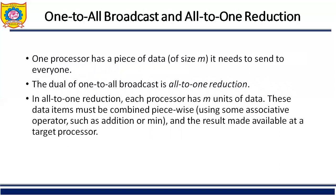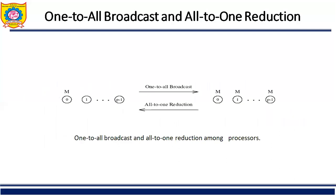One processor has a piece of data of size M that it needs to send to everyone — that is called one-to-all broadcast. In all-to-one reduction, each processor has M units of data. These data elements must be combined piecewise using an associative operator such as addition or minimum, and the result is made available at the target processor. This figure shows one-to-all broadcast and all-to-one reduction among P processors. These operations are used in several important parallel algorithms including matrix-vector multiplication, Gaussian elimination, shortest path, and vector inner product.